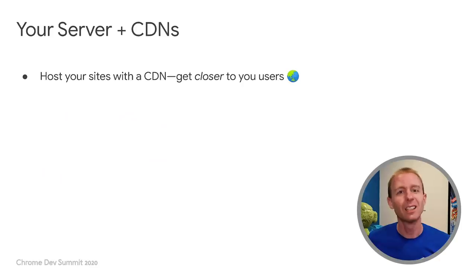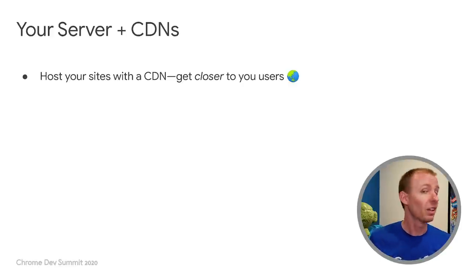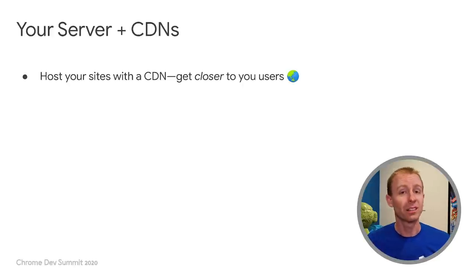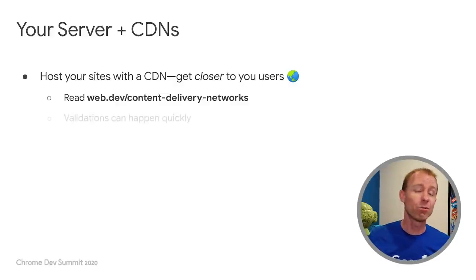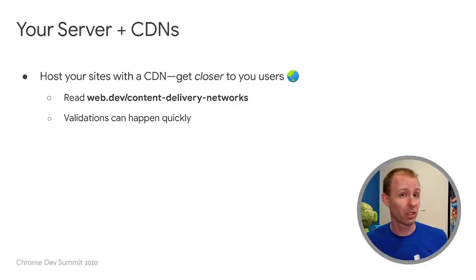I want to talk about some of the concepts I glossed over: CDNs, how cache-related headers work, and the sorts of files you might be able to make immutable. CDNs are a way to replicate your content physically close to your users, wherever they are geographically, bringing latency down. We also have a great article on this on web.dev. When I disable caching as I suggest in the well-lit path, I can validate quickly and make sure content is up to date because it's physically close to me.